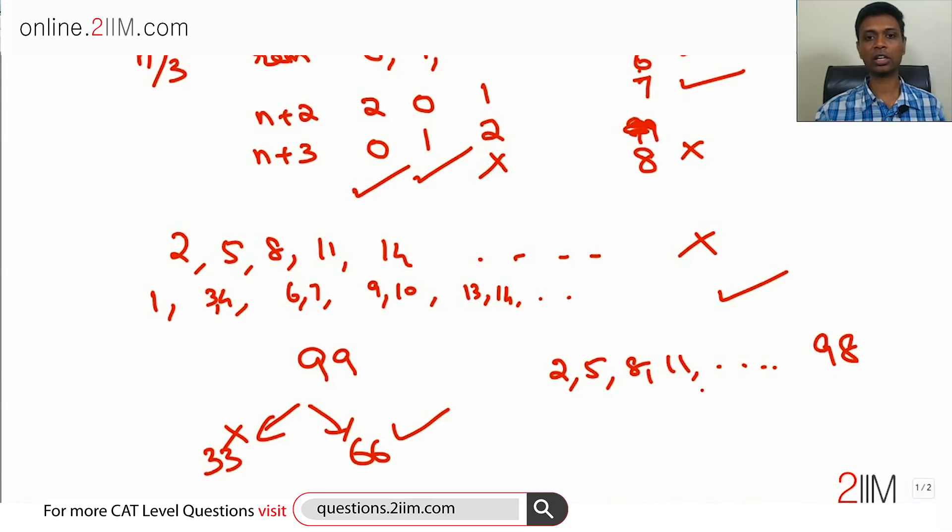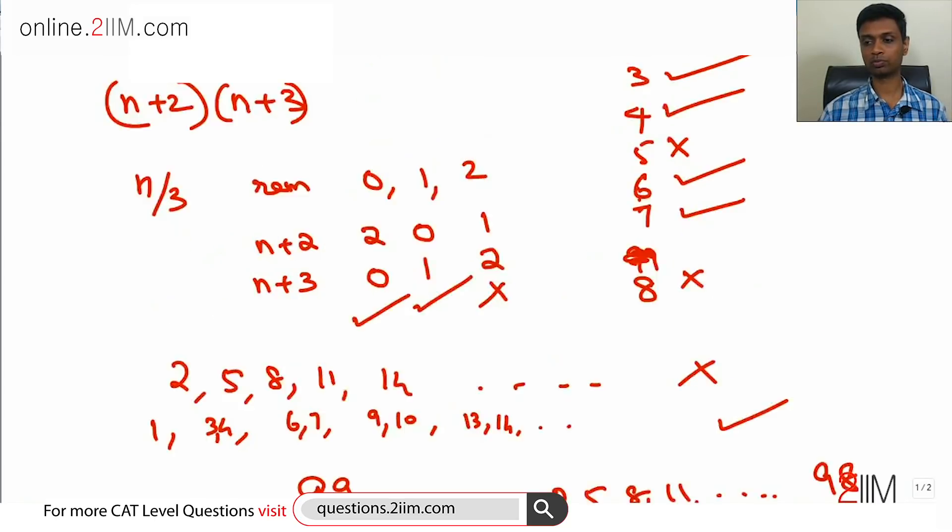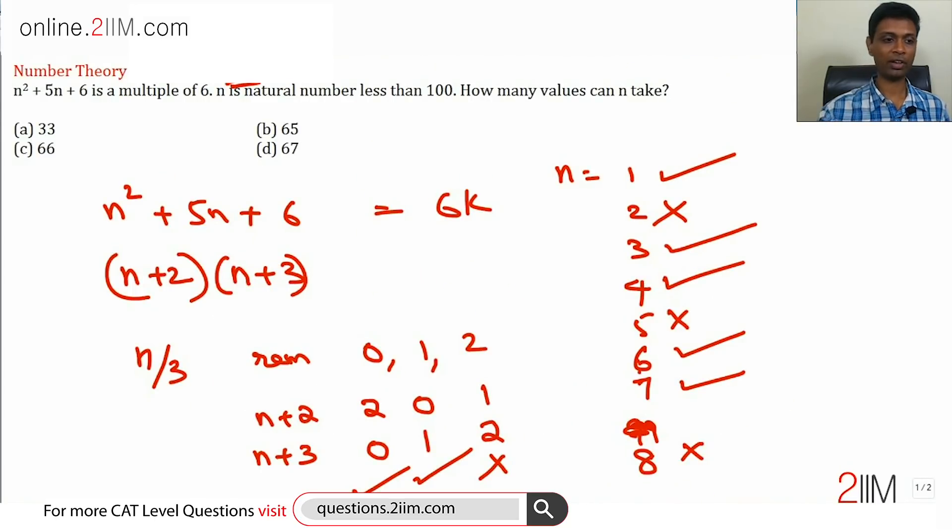33 into 2 is 66. 66 natural numbers it works. Now we just have to look at the answer charts when we get through. How many values can n take? n can take 66 values. This is more of a counting question than a number theory question, but we take an equation, factorize it, use a little bit of number theory, and then go on to counting. These kind of questions which combine more than one topic, they are becoming common. Keep it in mind.